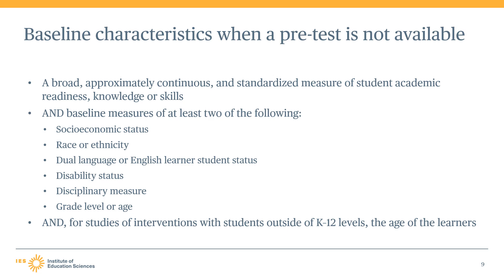It is also possible that some studies may adjust for baseline characteristics of participants through the design of the study. For example, if a study sample was composed of 100% English learner students in second grade, then the study effectively adjusts for English learner status and grade level of students.